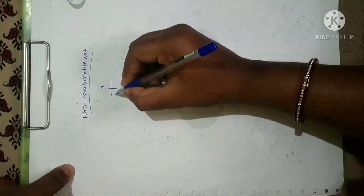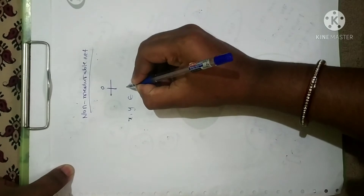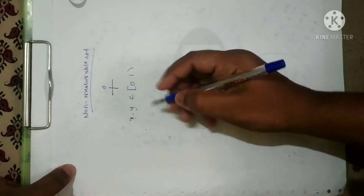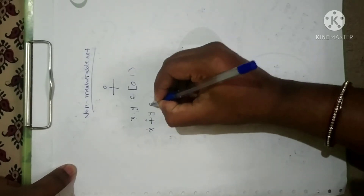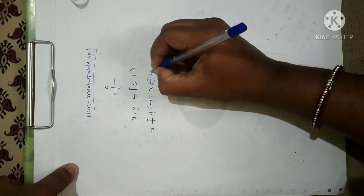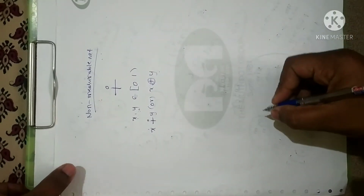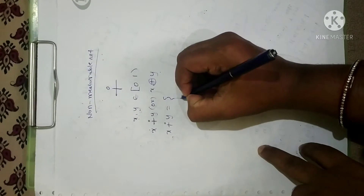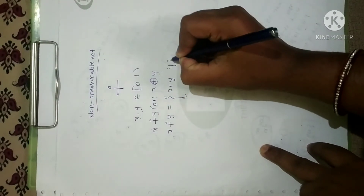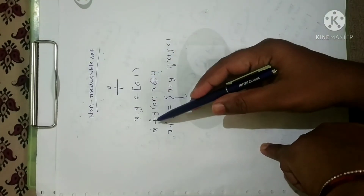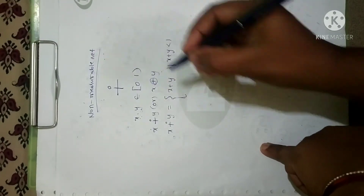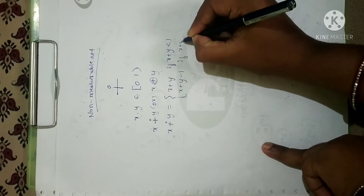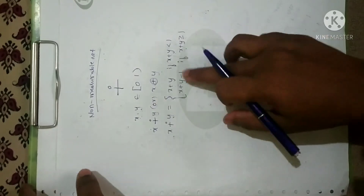Translation modulo 1 is defined as follows: for elements x, y belonging to the closed-open interval [0, 1), we define x ⊕ y (translation modulo) using a step function. This value equals x plus y if x plus y is less than 1, and x plus y minus 1 if x plus y is greater than or equal to 1. This is the step function definition for translation modulo 1.